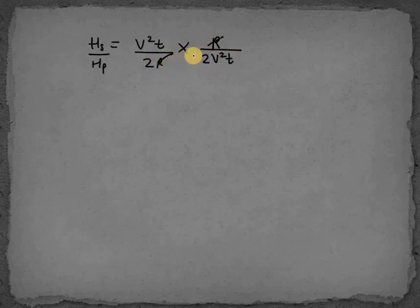R and R cancel out, V squared and V squared cancel out, T and T cancel out. So we are left with 1 over 4.